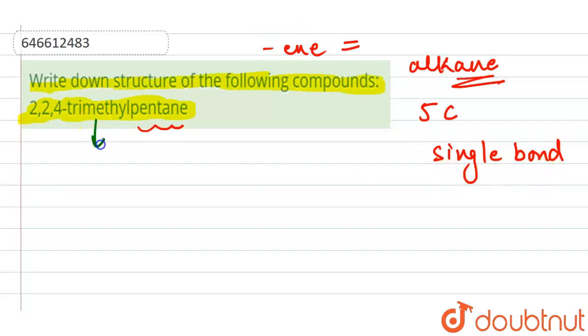And here 'trimethyl' indicates that this structure has three methyl groups. The positions are also given. So if we place five carbons: one, two, three, four, and five - it is single bonded, so let's place each bond.